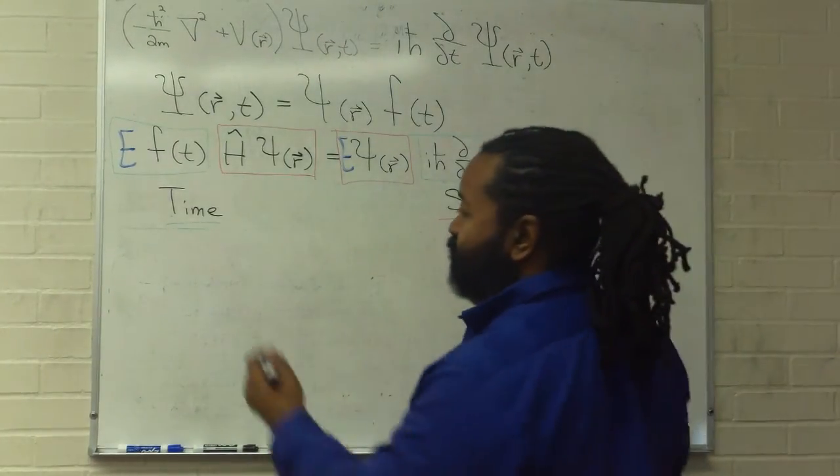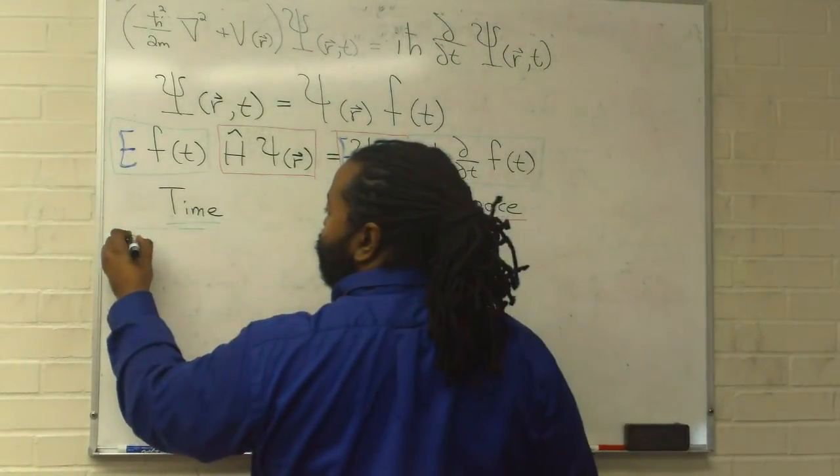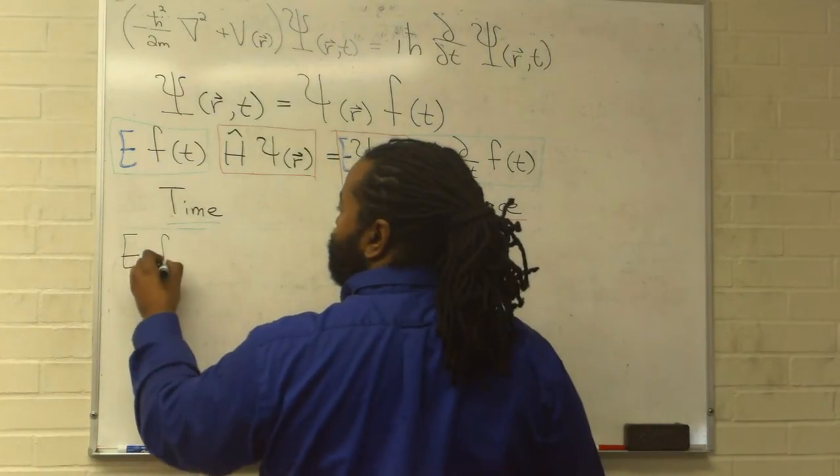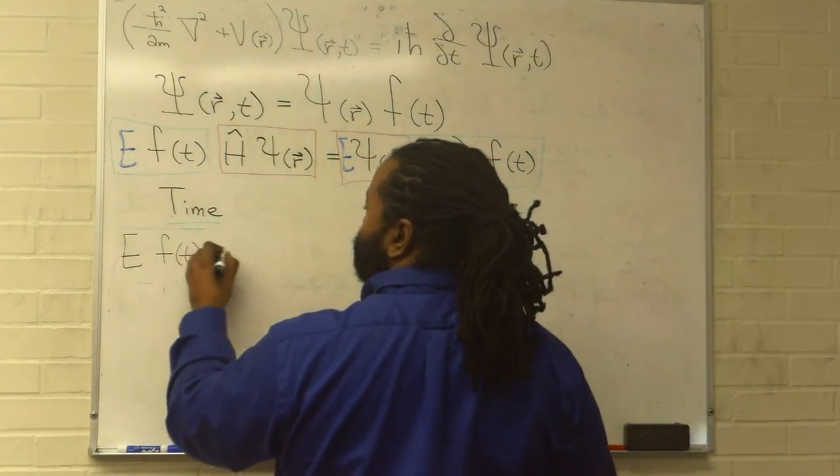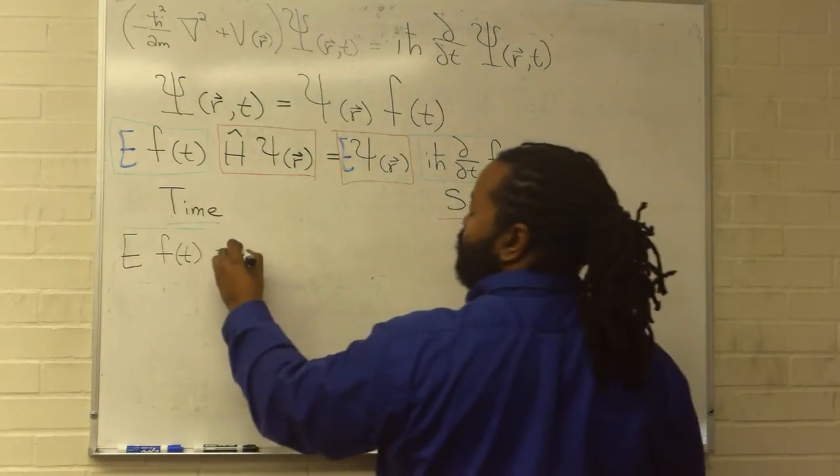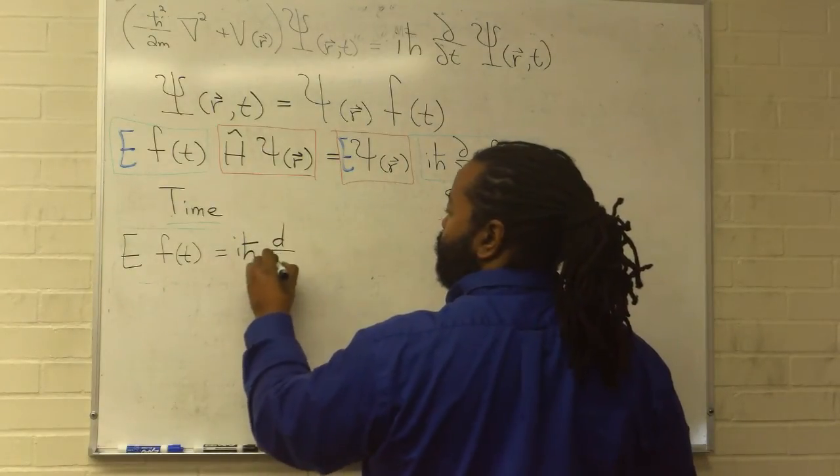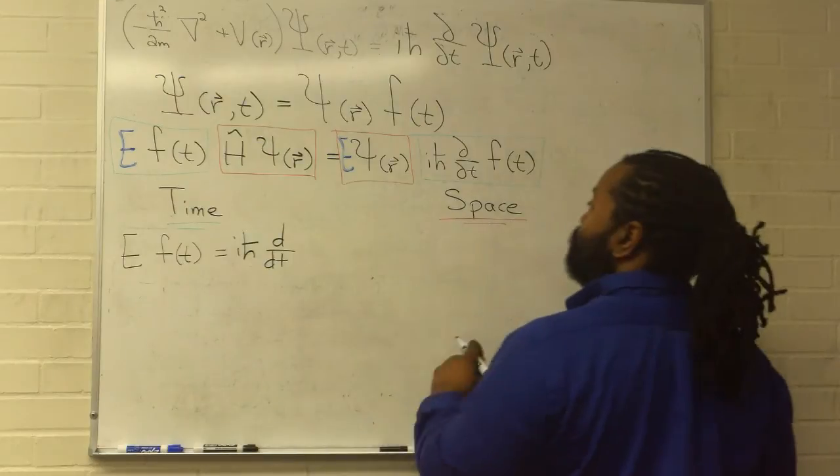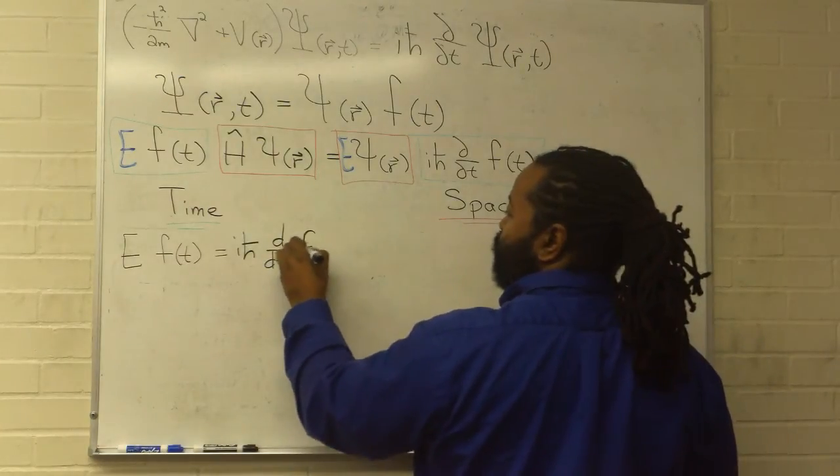For the time part of the solution, I then have this quantity E times the function itself equals i h-bar. Because we've separated, we can use straight derivative instead of partial.